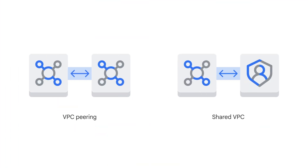VPCs belong to Google Cloud projects, but what if your company has several Google Cloud projects and the VPCs need to talk to each other? With VPC peering, a relationship between two VPCs can be established to exchange traffic. Alternatively, to use the full power of Identity Access Management to control who and what in one project can interact with a VPC in another, you can configure a shared VPC.